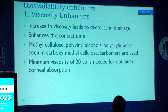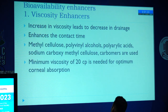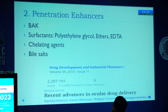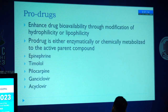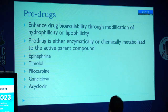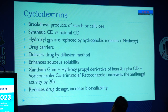Viscosity enhancers include methylcellulose, polyvinyl alcohols, polyacrylic acids, sodium carboxymethylcellulose, and carbomers — they increase viscosity, decrease drainage, and enhance contact time. Penetration enhancers are BAK, polyethylene glycol ethers, EDTA, chelating agents, and bile salts. Prodrugs are either enzymatically or chemically metabolized to an active parent compound; they enhance bioavailability by modification of hydrophilicity or lipophilicity. Examples include epinephrine, timolol, pilocarpine, ganciclovir, and acyclovir. Cyclodextrins are breakdown products of starch or cellulose, either synthetic or natural, delivering the drug by diffusion.